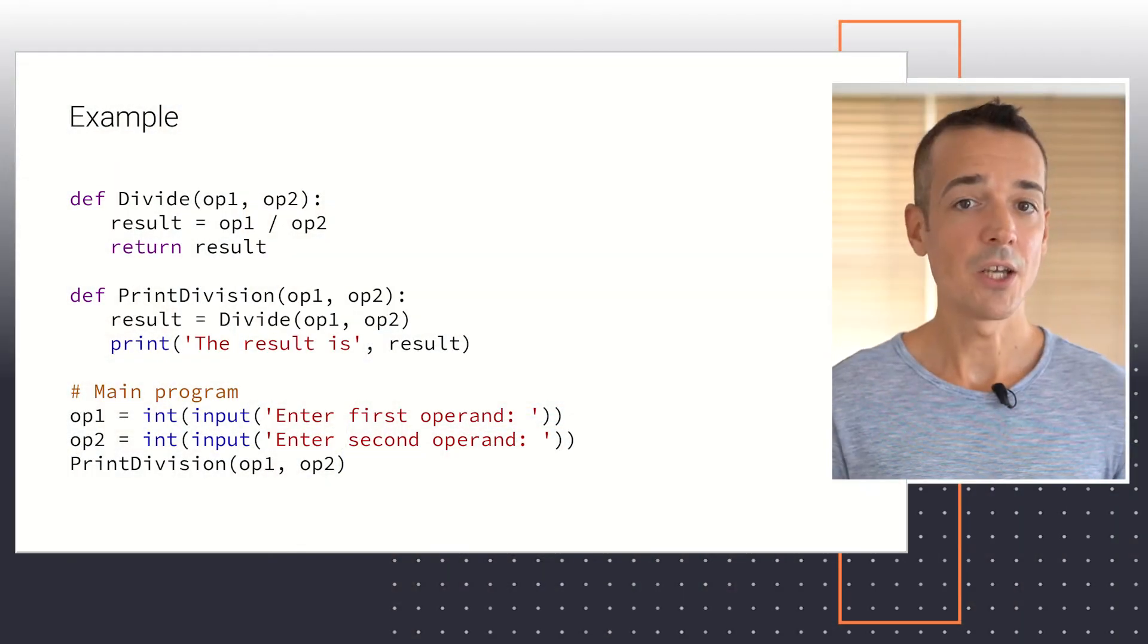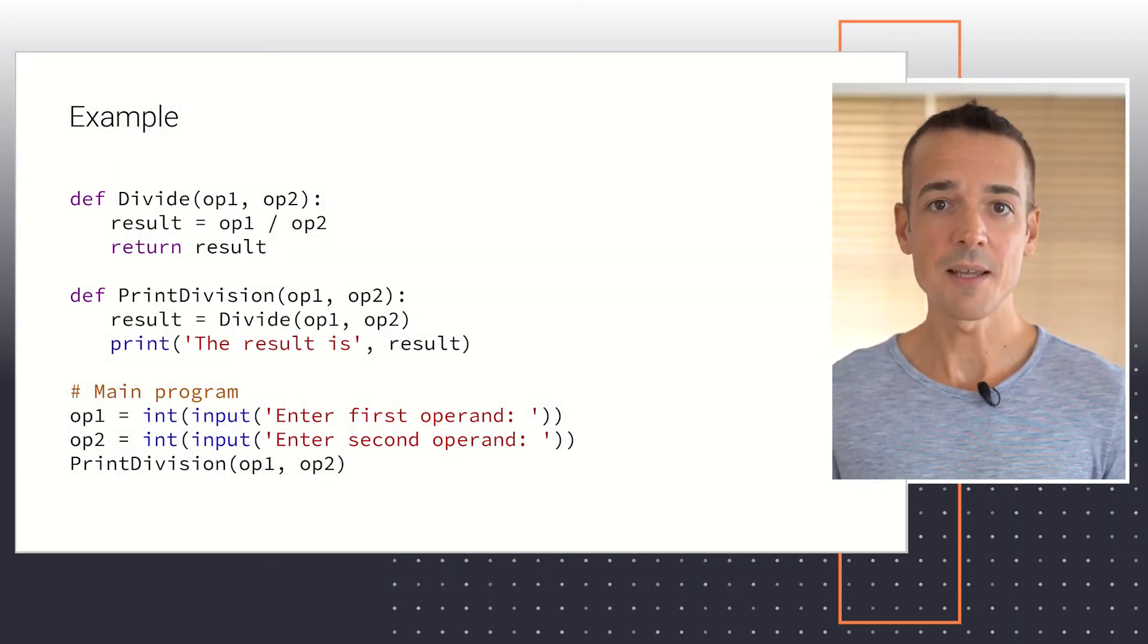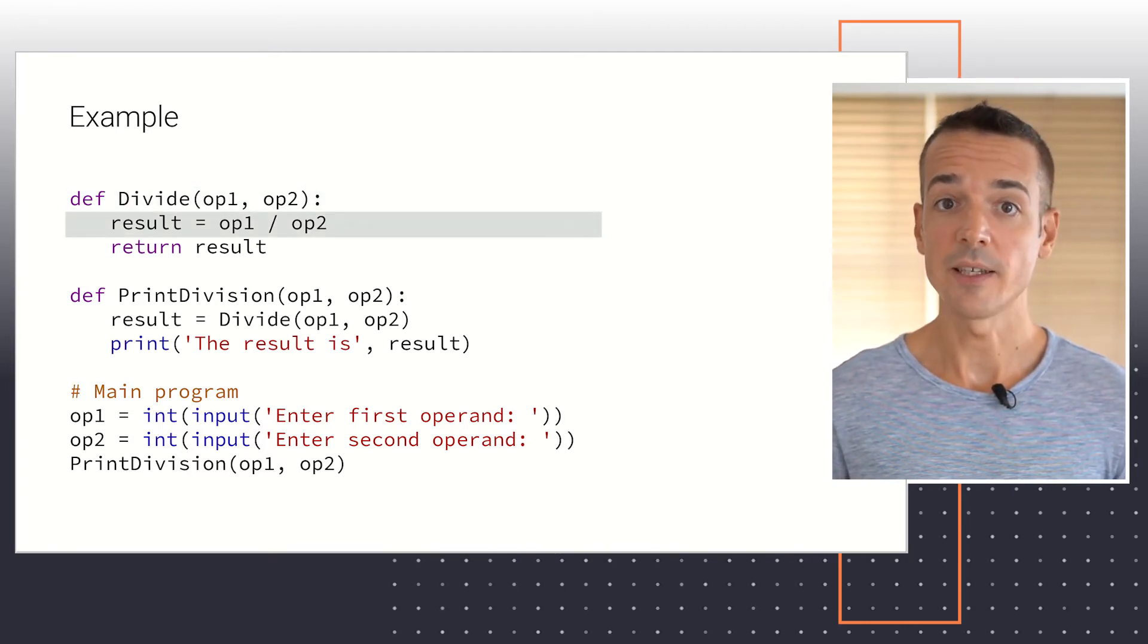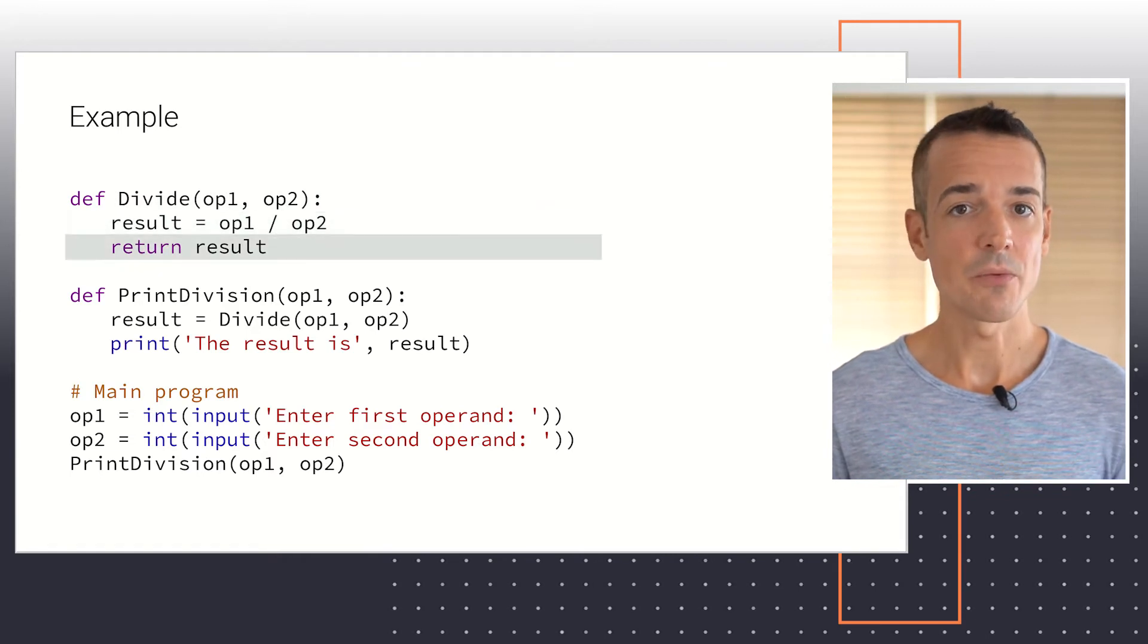Let's look at a concrete example to illustrate the propagation of exceptions. The following code includes two functions and a main program. Function Divide accepts two input arguments, calculates their division, and returns the result.